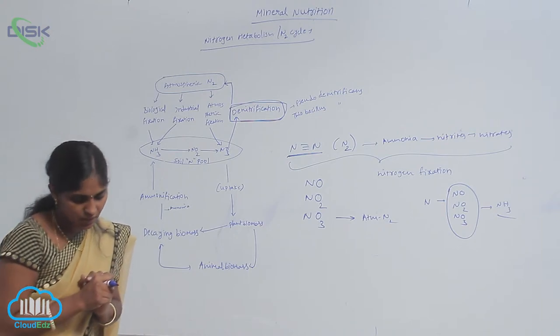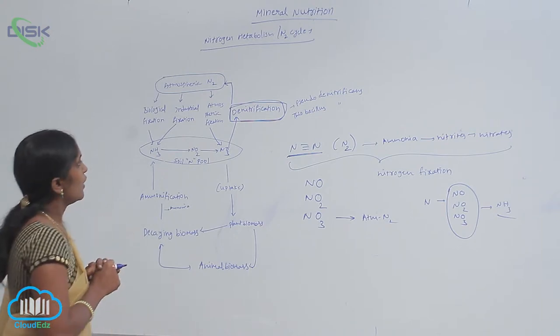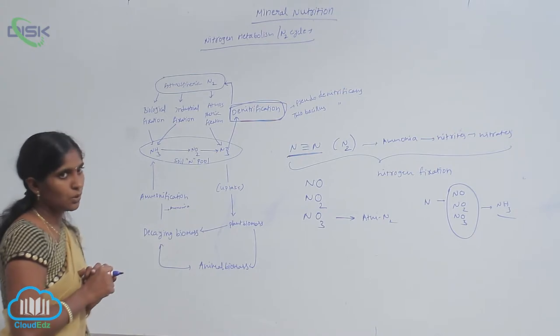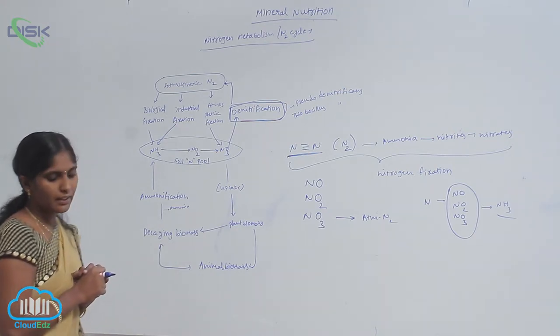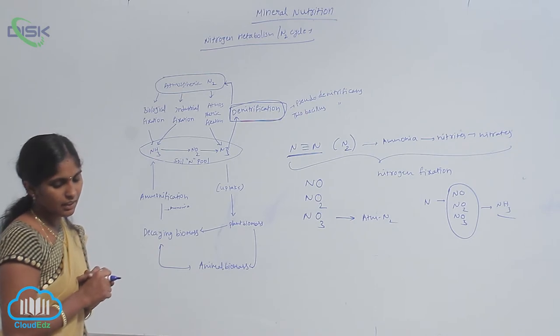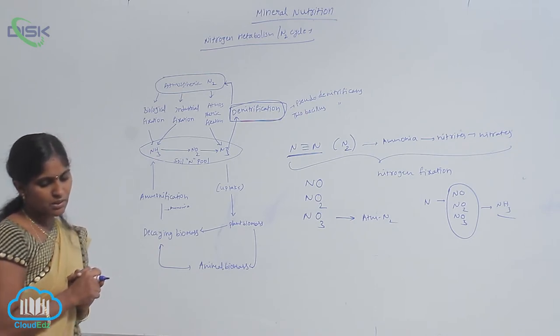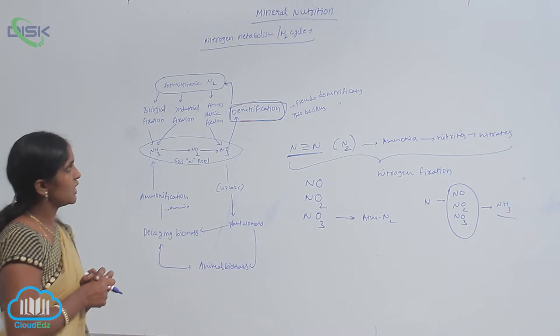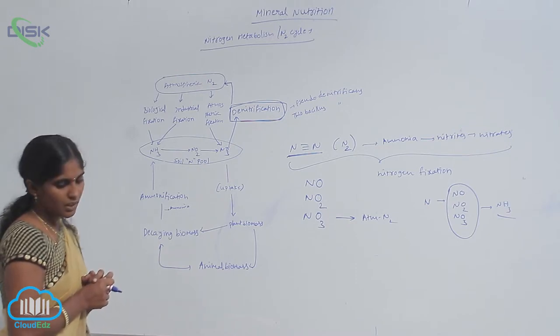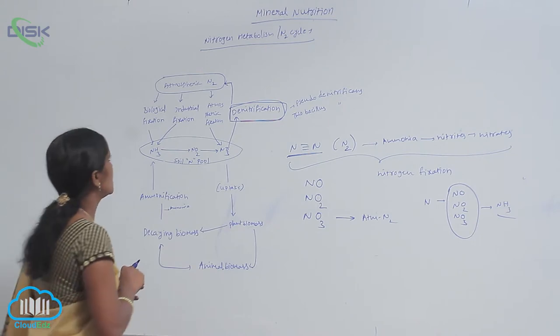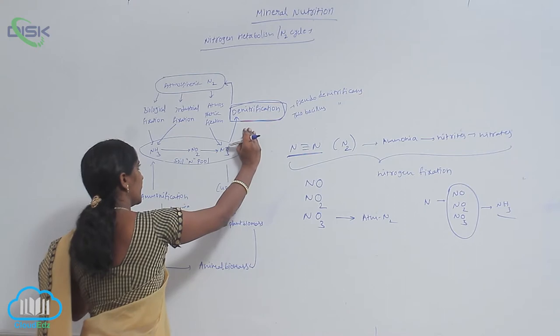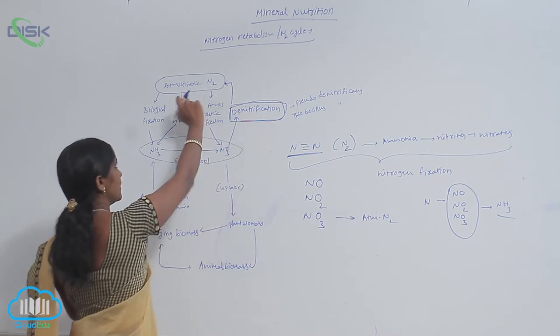Denitrification is the formation of nitrogen from nitrates. The nitrate present in the soil is reduced into nitrogen. This is denitrification, and it is one source of atmospheric nitrogen.